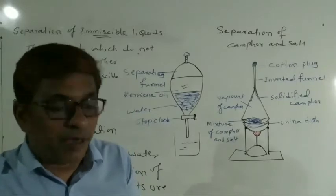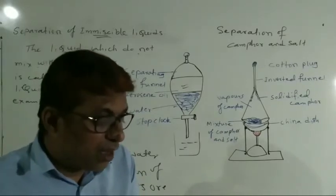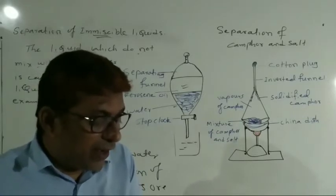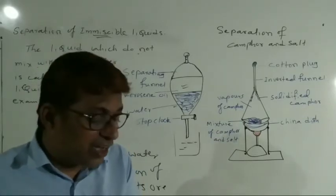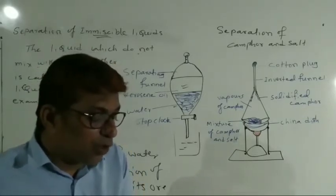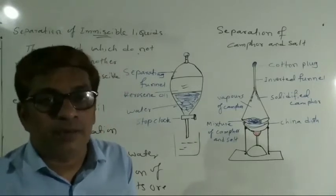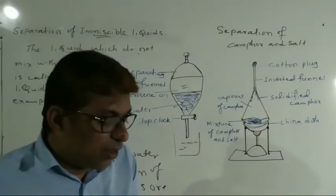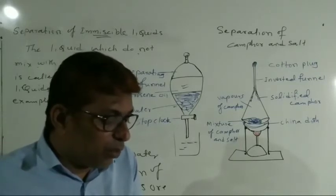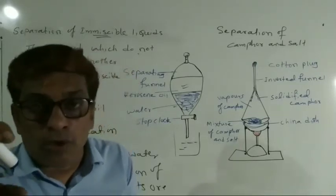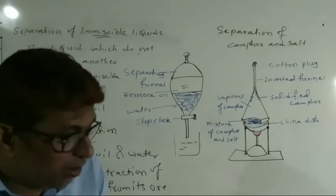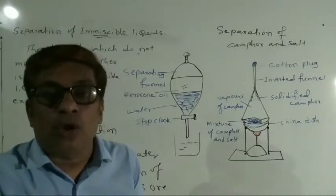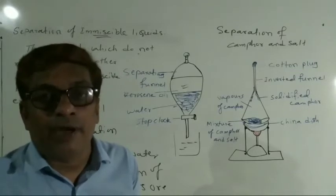In the extraction of iron from its ore, the light slag is removed from the top by this method, leaving the molten iron at the bottom of the furnace. The slag is at the top and the molten iron is at the bottom — in this way you can separate them out.